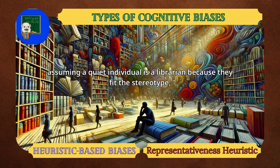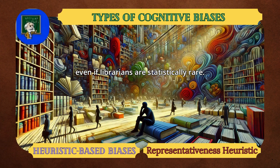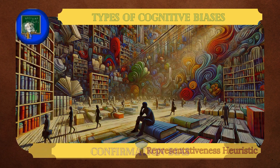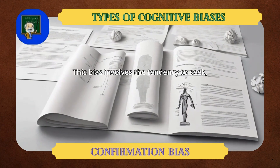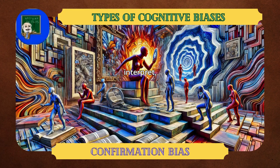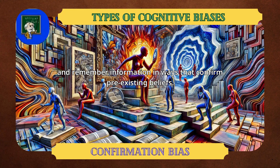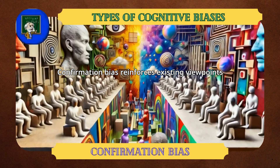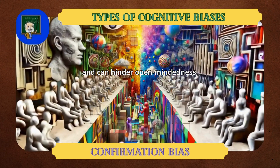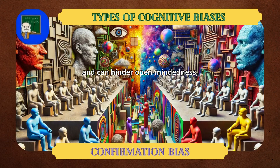For example, assuming a quiet individual is a librarian because they fit the stereotype, even if librarians are statistically rare. Confirmation Bias: this bias involves the tendency to seek, interpret, and remember information in ways that confirm pre-existing beliefs. Confirmation bias reinforces existing viewpoints and can hinder open-mindedness, contributing to phenomena like polarization.